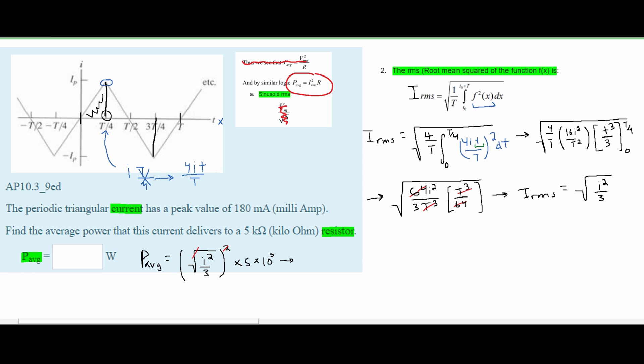So rewriting this, we have I squared which we know to be 180 milliamps. Since we need it in amps, we have 180 times 10 to the negative third, and this is squared, divided by 3 times 5 times 10 cubed. If we plug this into a calculator we will get our answer. We're going to get 54 watts. And this is the power average for our problem.